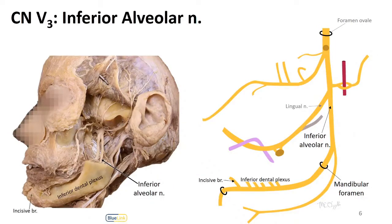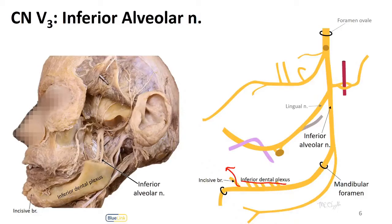The inferior alveolar nerve is a very important nerve. As it passes down into the infratemporal fossa into the mandible through the mandibular foramen, it gives off a bunch of little branches. These little branches make up the inferior dental plexus, which would be found inside the mandible. The last branch it gives off before exiting the mandible will be the incisive branch, which heads deep in the mandible to get to the incisors. And then finally, it forms the mental nerve — the termination of the inferior alveolar nerve — which exits the mental foramen out onto the area of the chin and is a sensory branch to the skin of the chin.